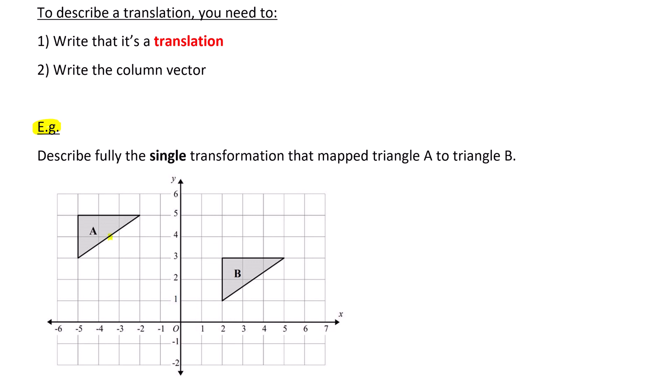So it's a single transformation that mapped triangle A to triangle B. So basically, how did triangle A become triangle B? And it's a single transformation. So that means only one thing happened. You cannot say it was rotated then reflected. Only one transformation is required. One out of the four.